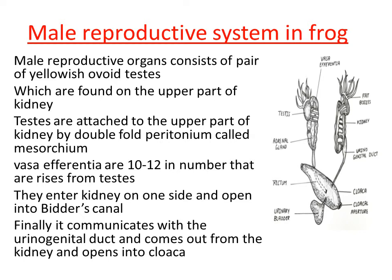The urinogenital duct gets its name because urine, which is an excretory product, as well as sperm — the genital product — both pass through this common duct. So the urine as well as the sperm passes through the same duct named as urinogenital duct. The vasa efferentia connect with the urinogenital duct by passing through Bider's canal, and finally the sperm formed in the testes is carried through the vasa efferentia and reaches the urinogenital duct.